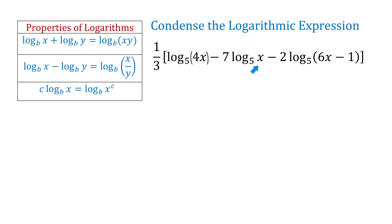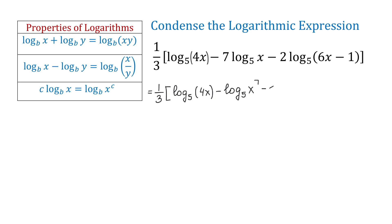Let's start by condensing these logarithms. In the first step, we find any numbers in front of logarithms and write them as exponents. So we will have 1 over 3 times bracket: log base 5 of 4x minus log base 5 of x to the 7th power minus log base 5 of 6x minus 1 to the 2nd power. Now 7 is the exponent of x, and 2 is the exponent of 6x minus 1.